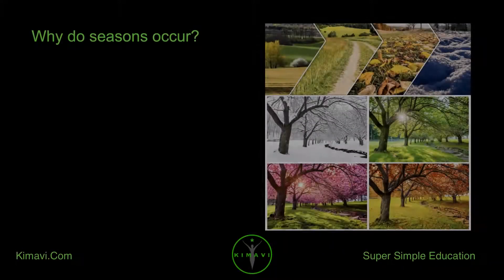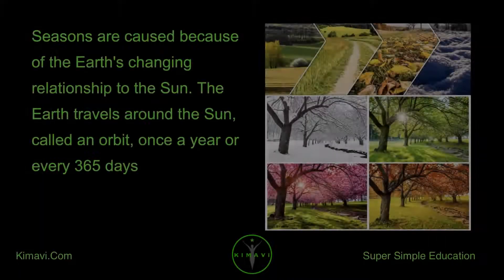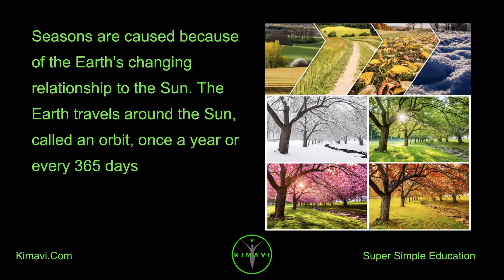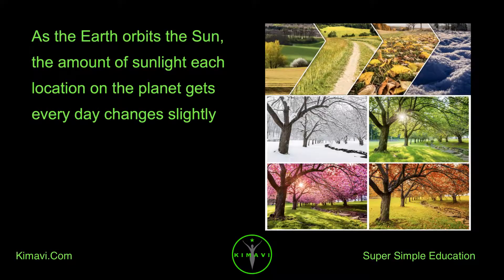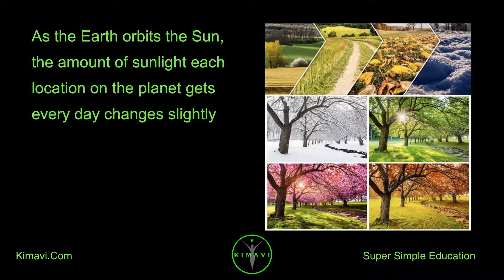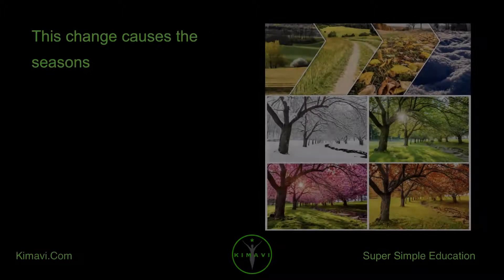Why do seasons occur? Seasons are caused because of the Earth's changing relationship to the Sun. The Earth travels around the Sun, called an orbit, once a year, or every 365 days. As the Earth orbits the Sun, the amount of sunlight each location on the planet gets every day changes slightly. This change causes the seasons.